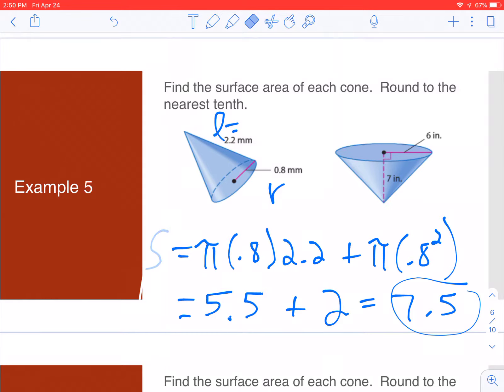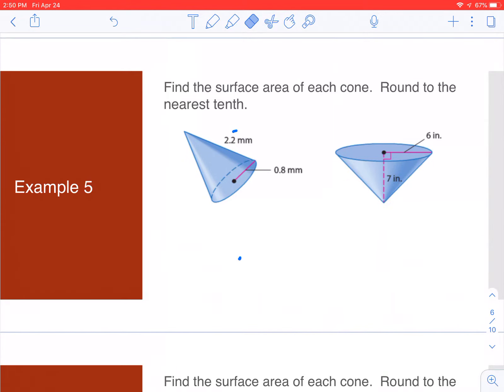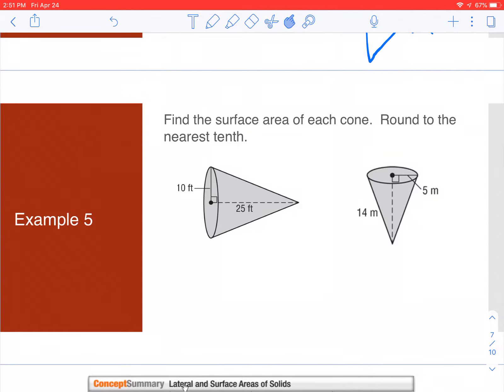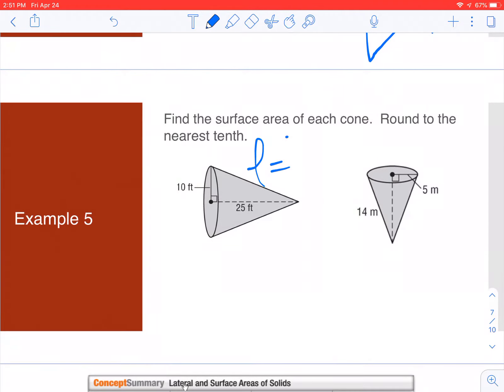In this picture, we don't have slant height, just the altitude. Pull out the triangle with sides 6, 7, and L. Use Pythagorean theorem to find L, then plug it into the equations. Use A squared plus B squared equals C squared.